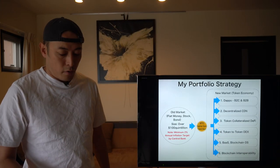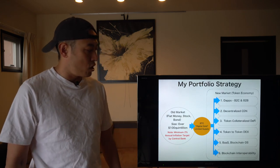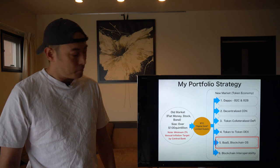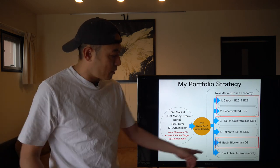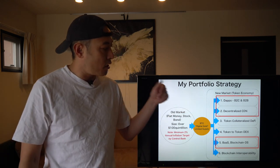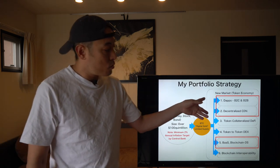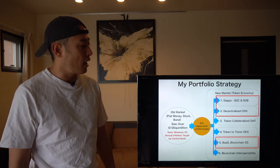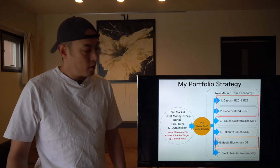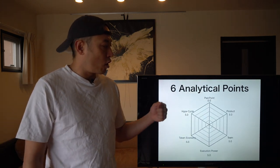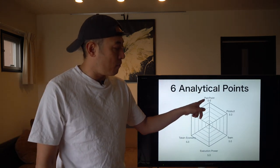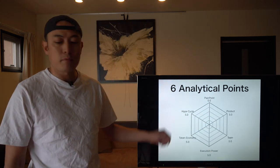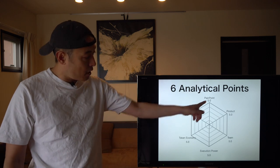Let's start. From my portfolio strategy, the category and layer that Tron is positioned in is not only as a BIOS project, but since they're going to take a vertical product strategy model, I also categorize them into the depth layer — first, the BIOS layer, and second, decentralized CDN. The six regular analytical points I'll cover are: pain points, products, teams, execution power, token economy, and hype cycle. Let's start with number one: pain point.